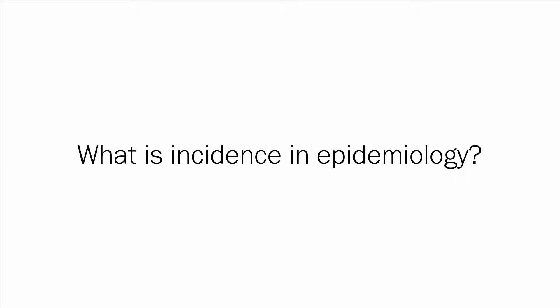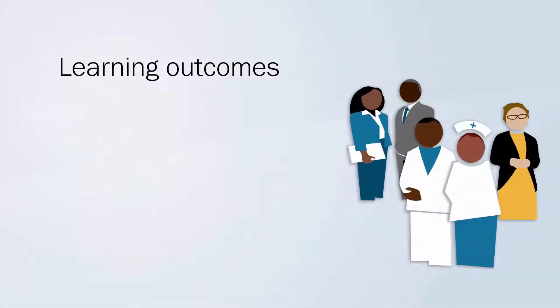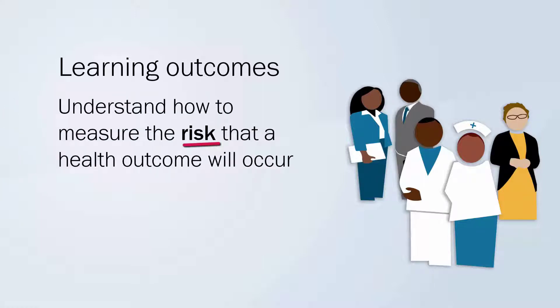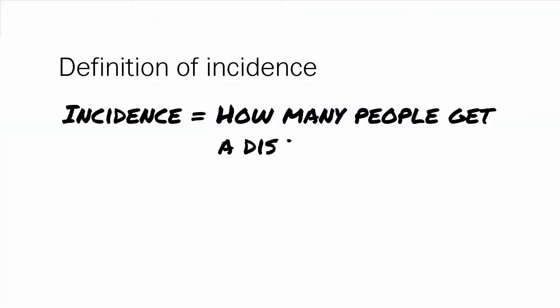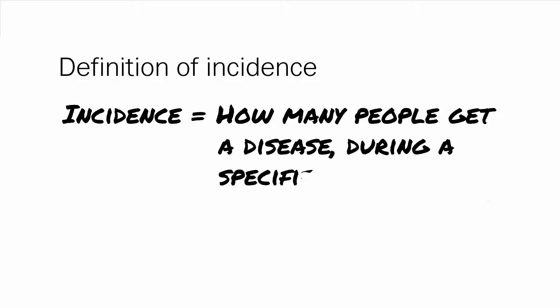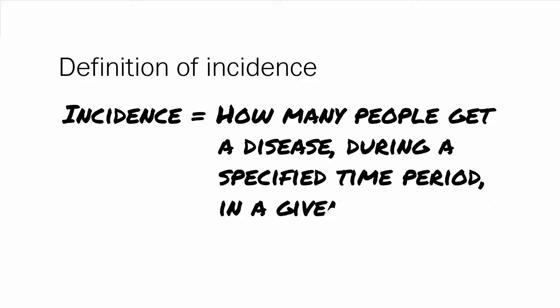What is incidence in epidemiology? By the end of this session you should understand how to measure the risk that a health outcome will occur. In epidemiology this risk is commonly known as the incidence. Incidence is the measure of how many people get a disease during a specified time period in a given population.